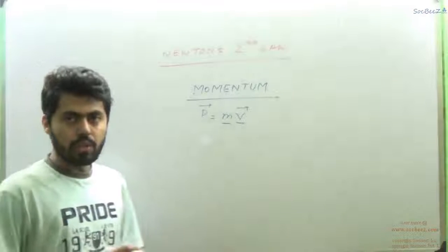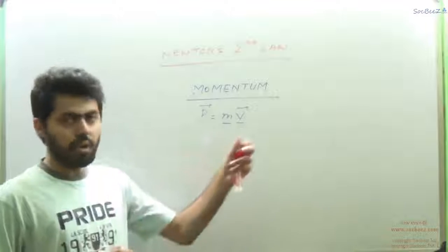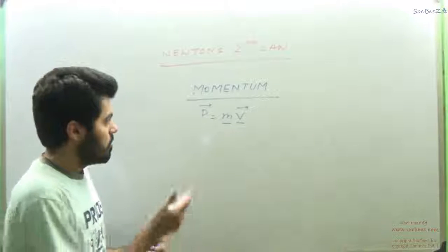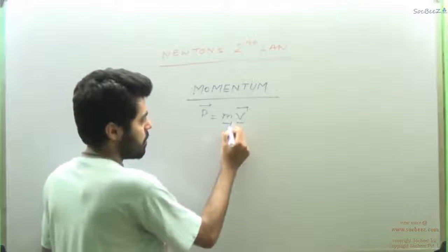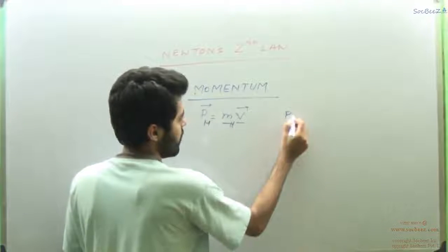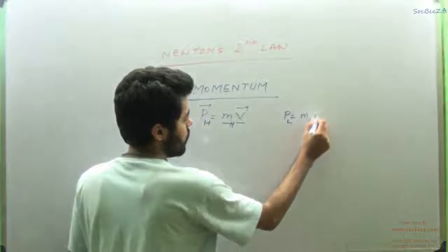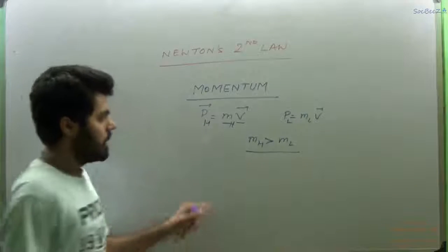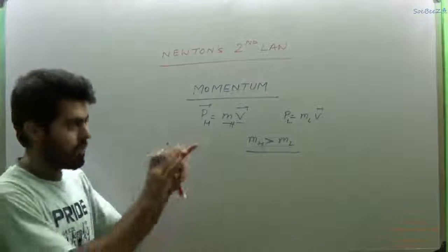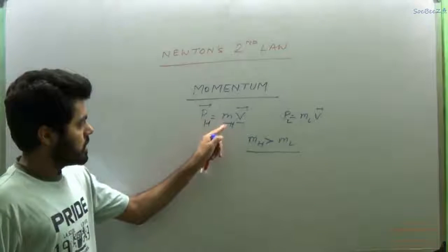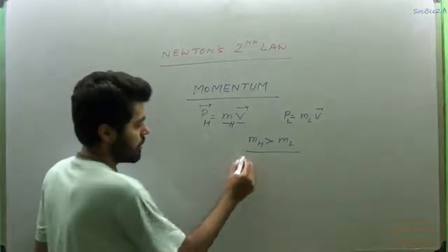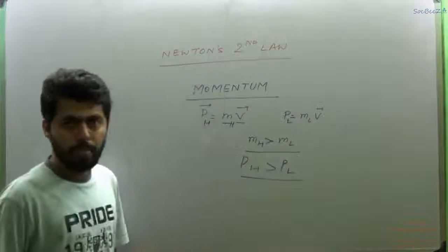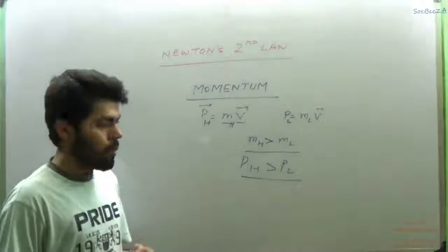When I was discussing Newton's First Law, I gave an example of a heavy man. Suppose a heavy man is running and you are asked to go and stop him. Compare the momentum of a heavy man - mass of heavy man times velocity - and momentum of a light man - mass of light man times velocity. Since mass of heavy man is greater than mass of light man, if both are coming with the same velocity, then momentum of heavy man will be greater than momentum of light man. And your task is to stop him.